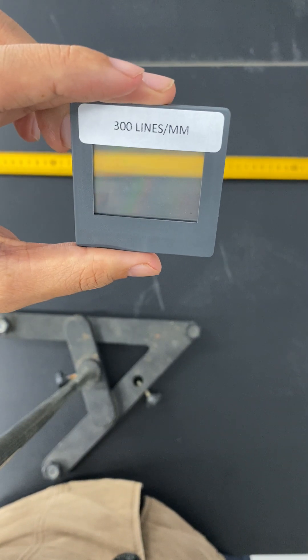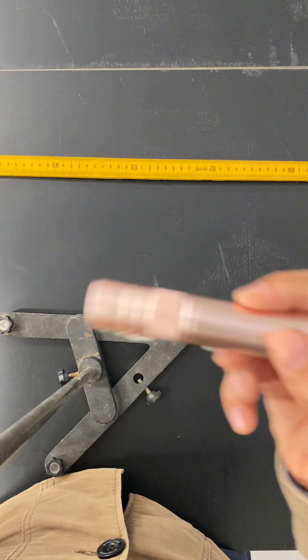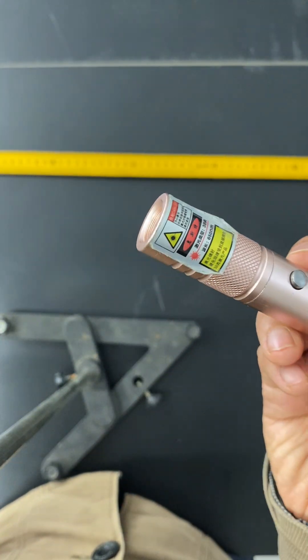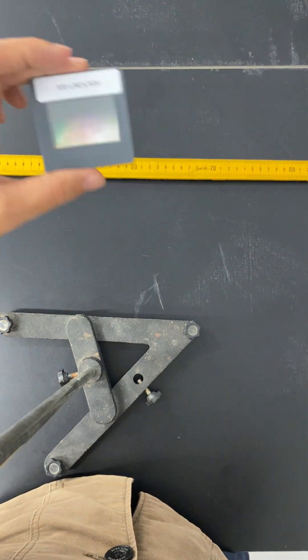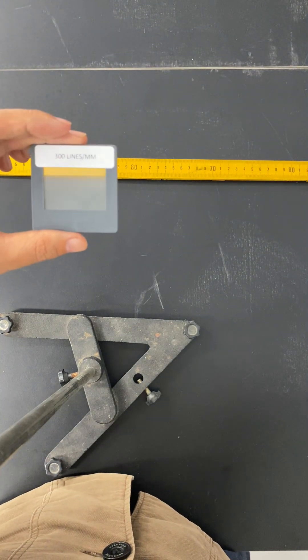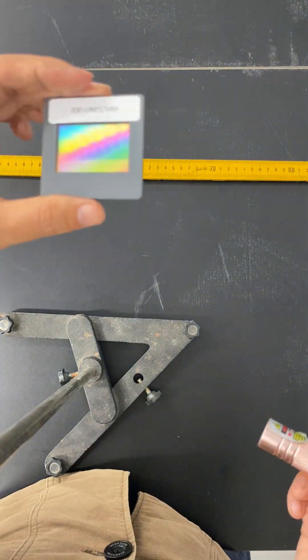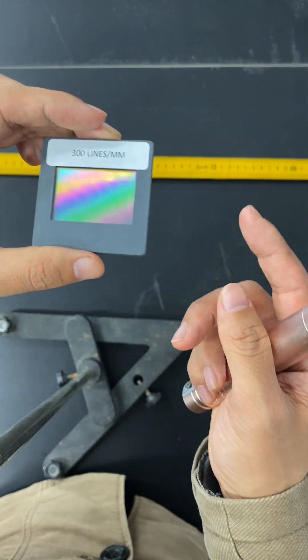This is a 300 lines per millimeter diffraction grating. By using a red laser, I can demonstrate how a diffraction grating can be used to determine the wavelength. Obviously I need to measure the distance from the diffraction grating to the table.